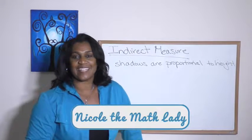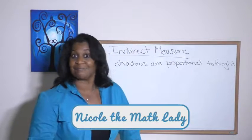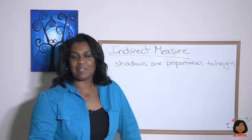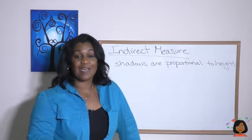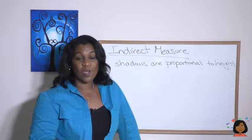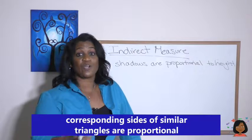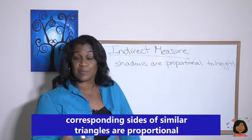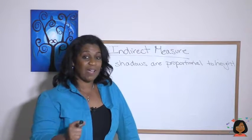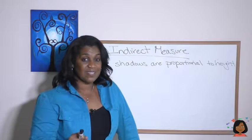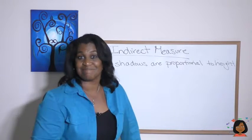Hi, it's the cold math lady. Today we're talking about indirect measure. It's really just a fancy way to talk about similar triangles. What we know about similar triangles is that the corresponding sides of the similar triangles are proportional. We're going to apply that same concept today to shadows that are cast by the sun.